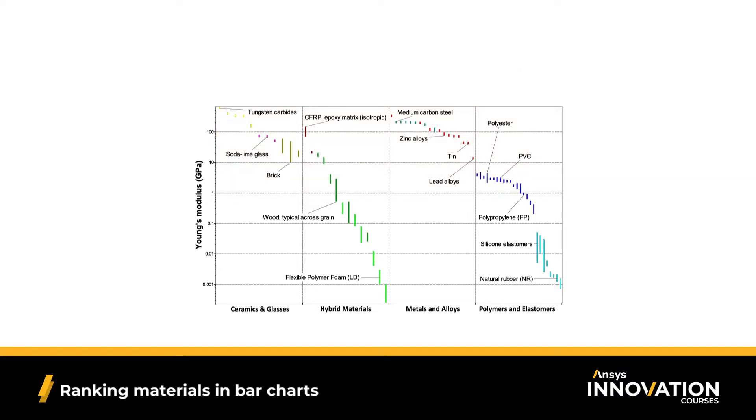But what if I'm instead designing a material for the bottom of a running shoe? I want some amount of stiffness, but in order to protect my joints, I need something with a lower stiffness than my dinner plate. Therefore, I'm going to shift my focus lower on this bar chart and look to optimize my property in this region.